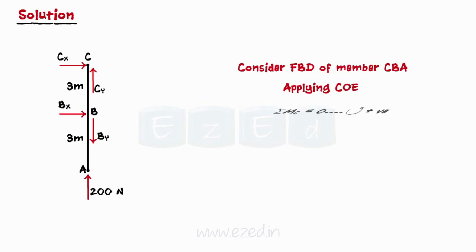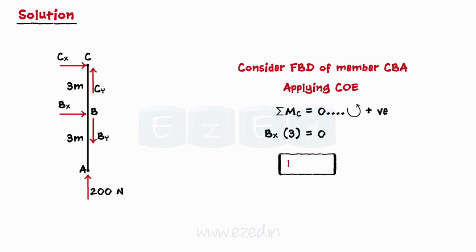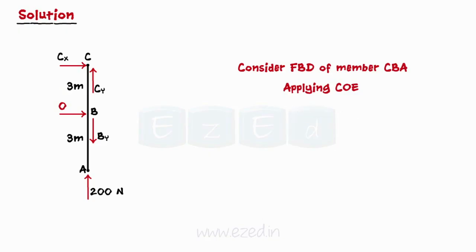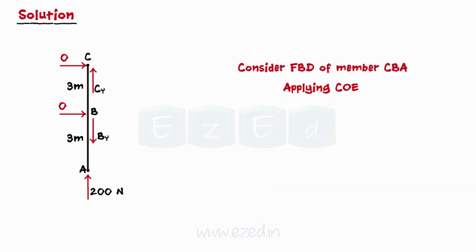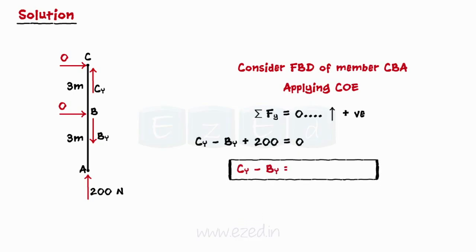We will apply conditions of equilibrium to member CBA. First, we equate the summation of moments of all forces about point C to zero, giving us the x-component of pin reaction at B as zero. Then, equating the summation of forces in the x-direction to zero gives us the x-component of pin reaction at C as zero. Equating forces in the y-direction to zero gives us an equation, say equation one, relating the y-components of pin reactions at B and C.